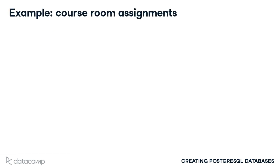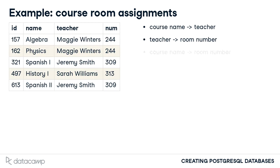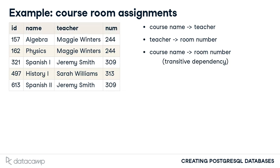An example will help to clarify this concept. Returning to our school database, imagine a table storing data about course room assignments, including room numbers. In this school, teachers teach in the same classroom throughout the day. If we know the name of the course, we automatically know the teacher. Knowing the name of the teacher is all we need to know to get the teacher's room number. Therefore, the course name is sufficient to know the room number for the class. This relationship creates a transitive dependency because knowing the course name also implies knowledge of the room number.